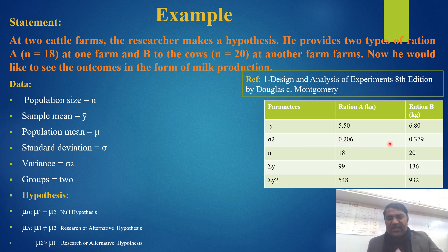The variance is 0.206 for group A and 0.379 for group B. The number of samples is 18 in group A and 20 in group B. The total sum is 99 for group A and 136 for group B, and the sum of squares is 548 and 932 respectively. The symbols used are: n for population size, y-bar for sample mean, mu for population mean, sigma for standard deviation, and sigma-squared for variance.